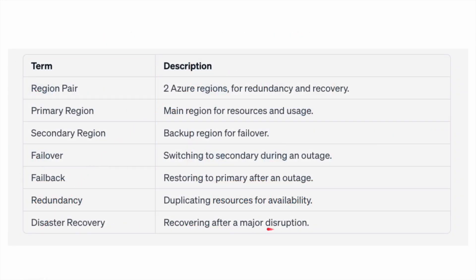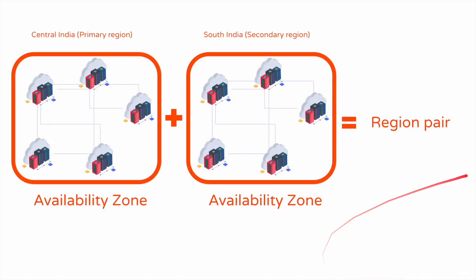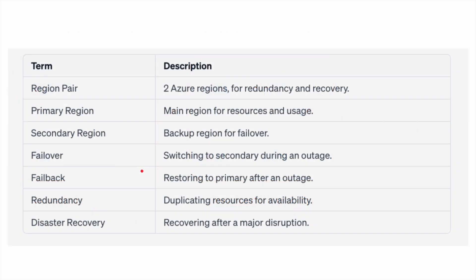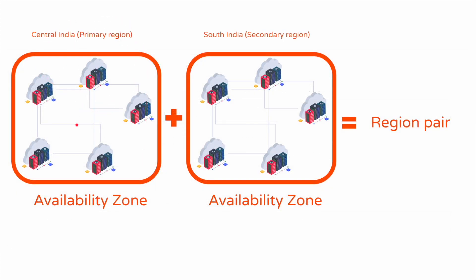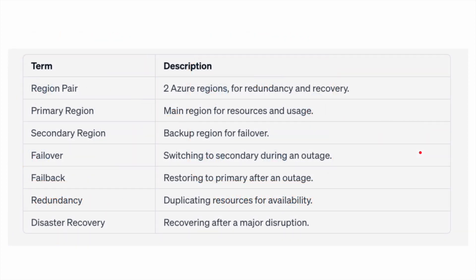The biggest takeaway from this video is that you don't have to take care of the physical infrastructure — you don't have to take insurance or pay for repairs during an outage, and you don't have to worry about any recovery. The failover is automatic, the failback is automatic, and the region pair creation is done by Microsoft. You just have to put everything in the primary region. The rest — creation of availability zones and region pairs — is all taken care of by Microsoft.